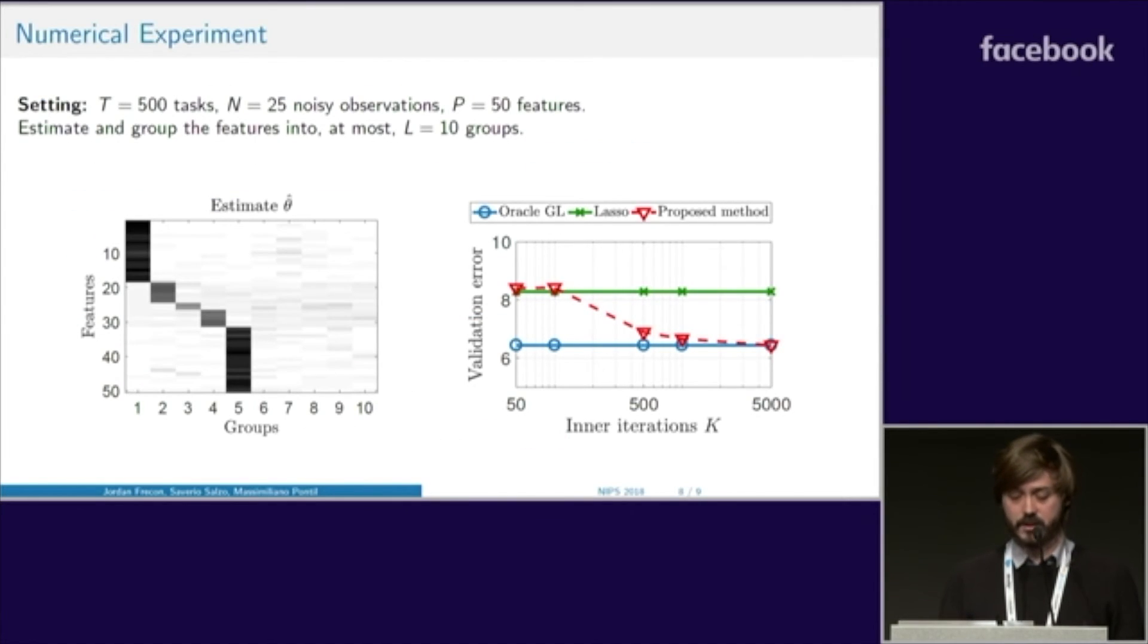Let's now take a look at some results. Here we estimate theta star shown in the previous slides. We let our algorithm estimate and group the features into at most ten groups. On the left side, you can see the recovered solution. It has correctly identified the first five groups and identified the next five as being empty. On the right side, you can see the impact of approximation parameter K on the validation error. For small values of K, performance is as bad as lasso, but if we increase K, we reach performance close to group lasso with oracle groups.